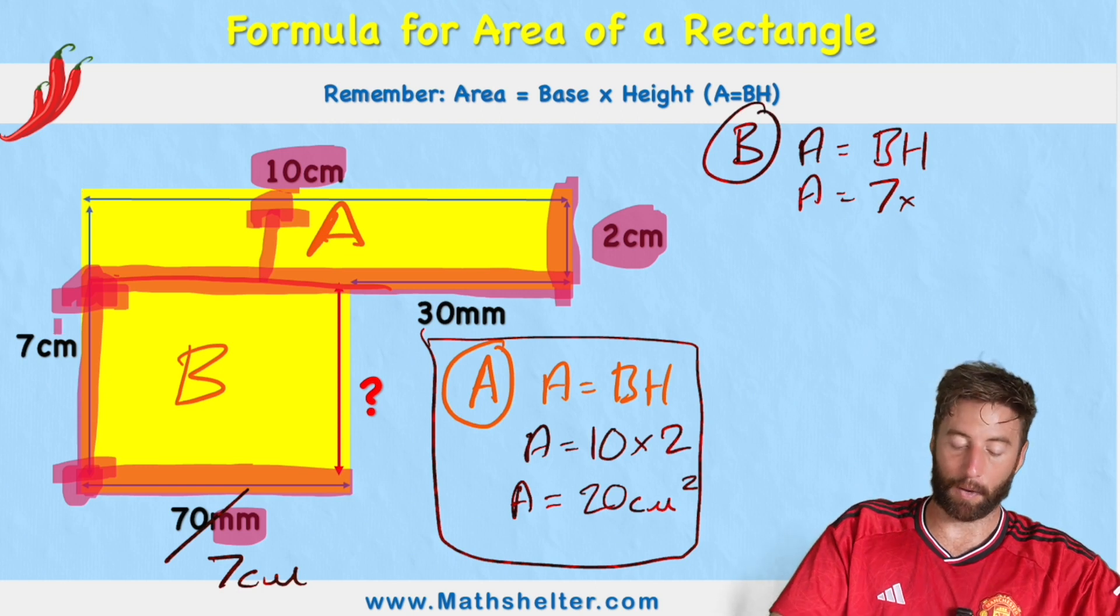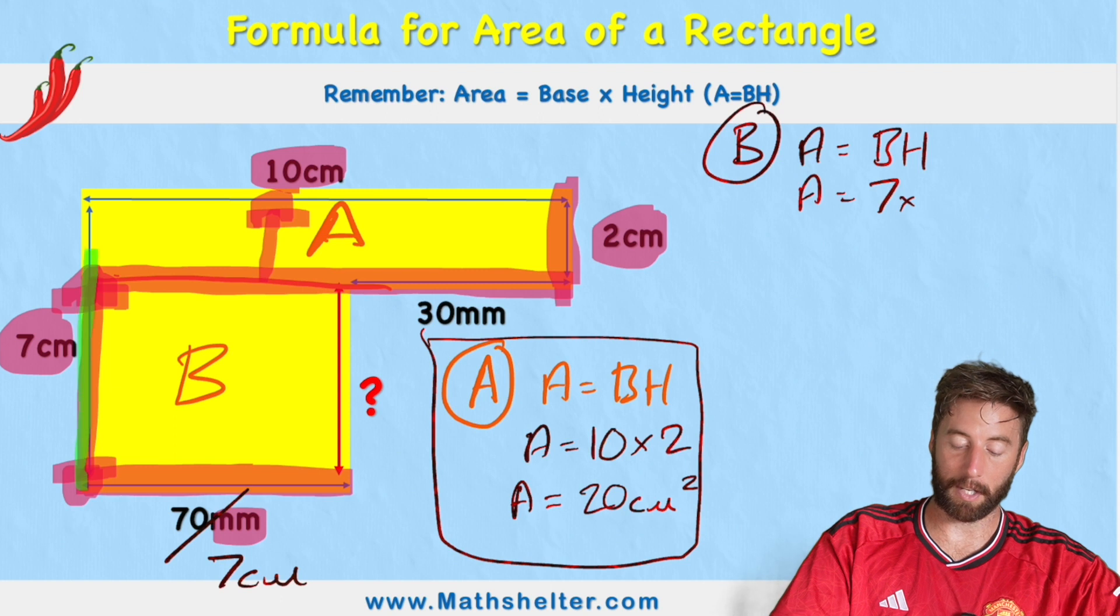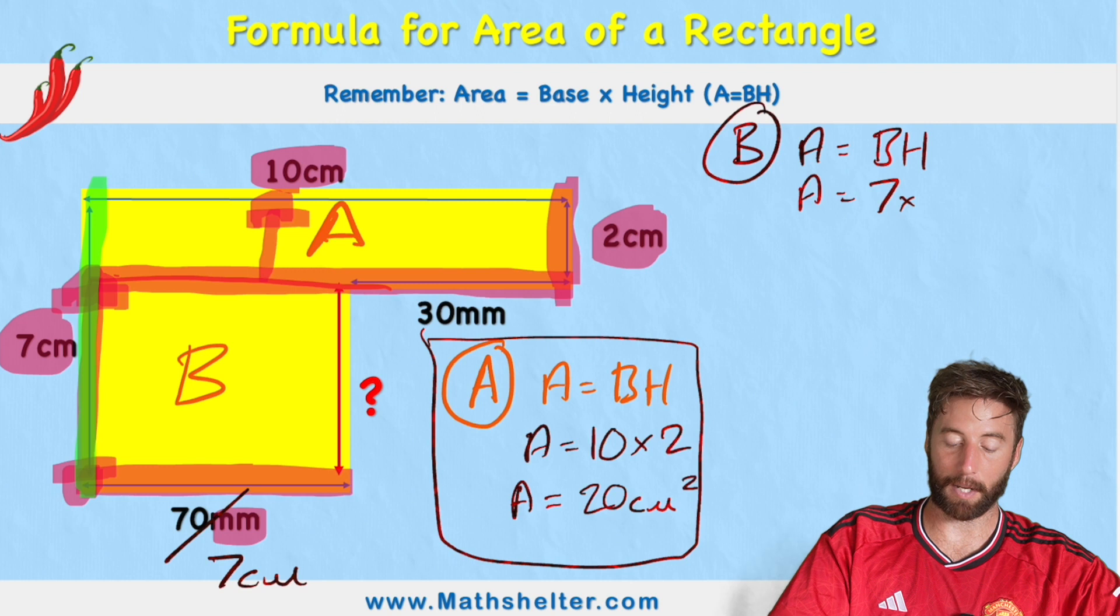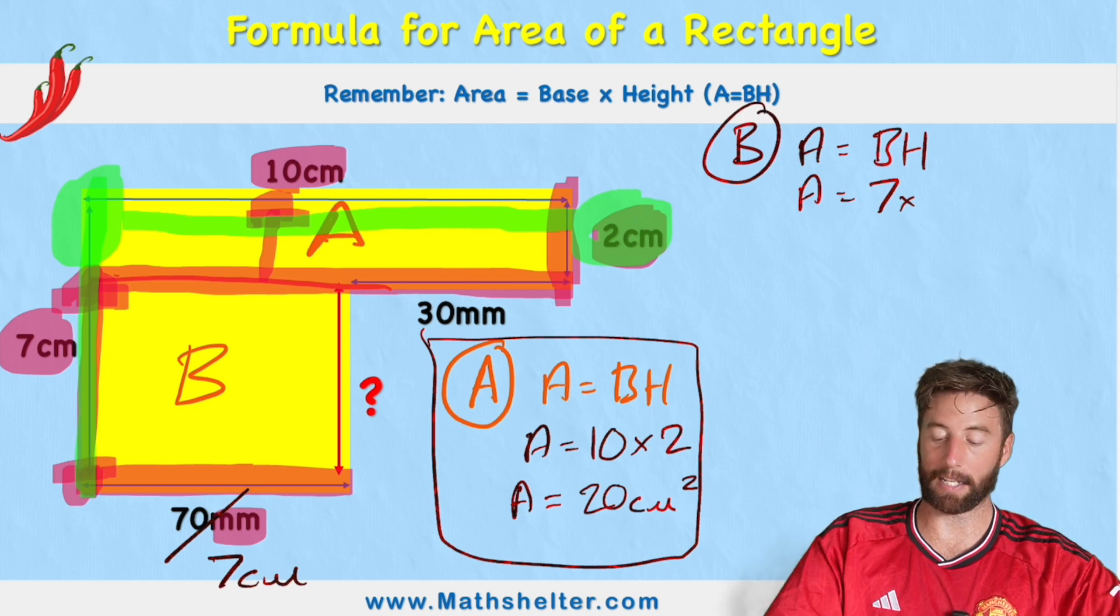So we might look at this and think, well, it's 7 centimeters. But no, because 7 centimeters goes all the way from the bottom to the top. So we need to get this 7 centimeters and get rid of this part here. So let's look opposite. Well, I can see that part was 2 centimeters.